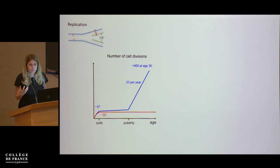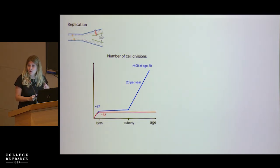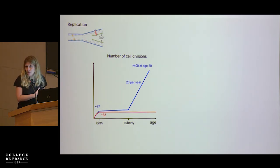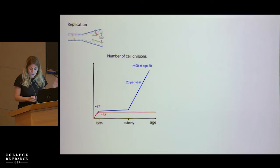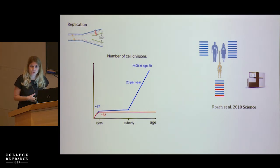If mutations are due to errors in replication, we might expect most mutations to come from males rather than females, and we would expect a linear — or at least increasing — number of mutations with paternal age. We can now test these predictions using next-generation sequencing by sequencing parents and children and looking for variants present in the child but not the parents, which must have arisen de novo in the last generation.